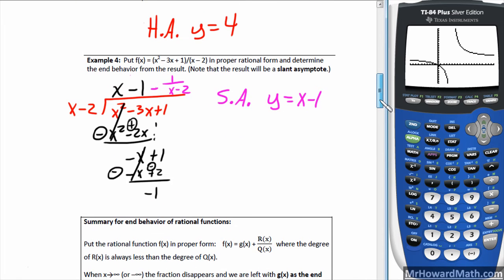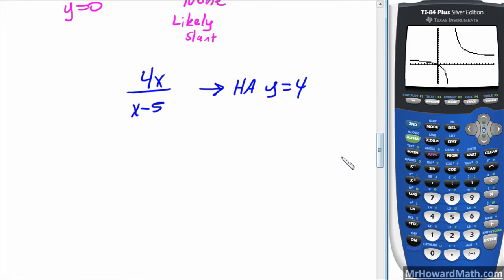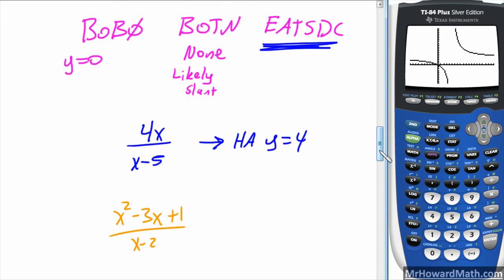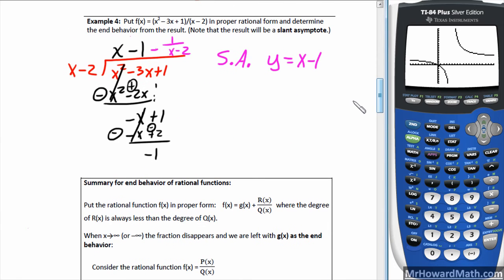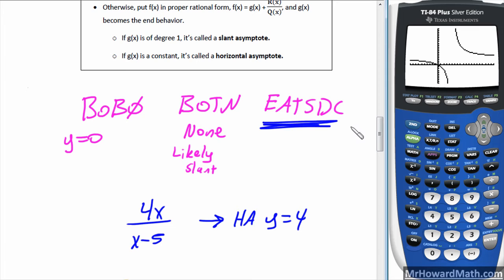The second example we worked with was, I'll write it down here, x squared minus 3x plus 1 over x minus 2. Okay, this one was bigger on top. We had a square on top, first power on bottom, bigger on top. So no horizontal asymptote, and we likely have the slant. So we need to do the long division, which we did up here. And we found the slant to be y equals x minus 1. So the Bobo Botten Eats DC actually helps shortcut that a little bit.